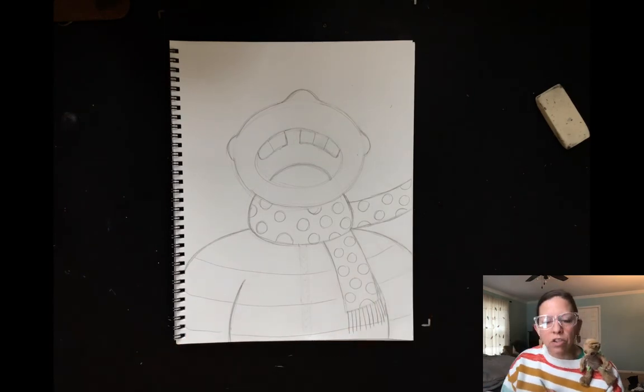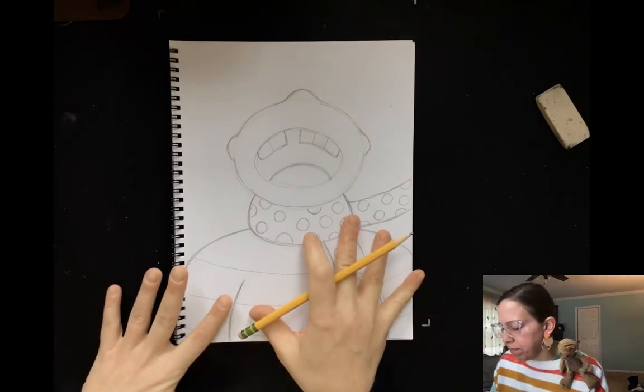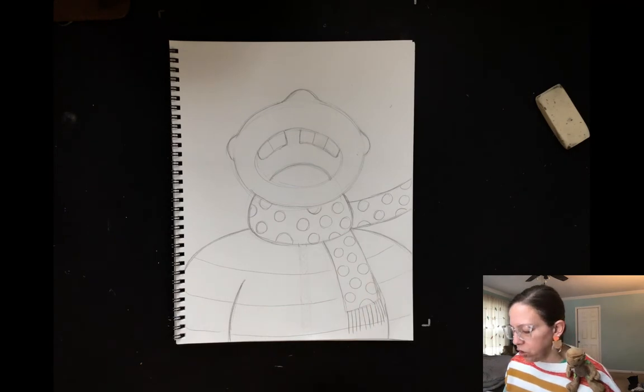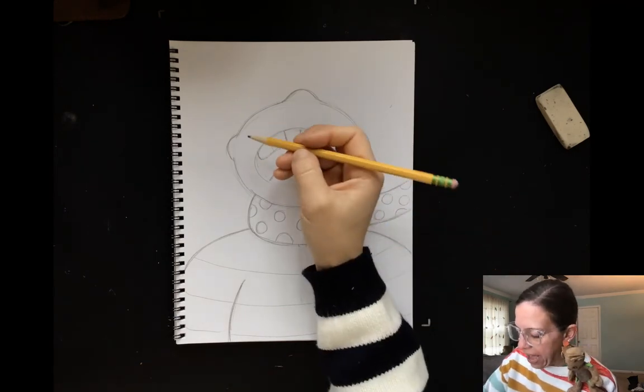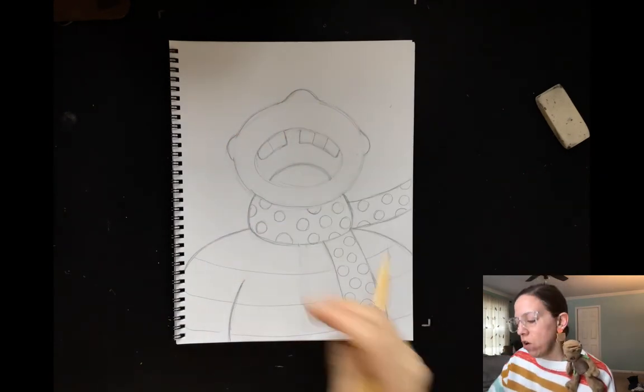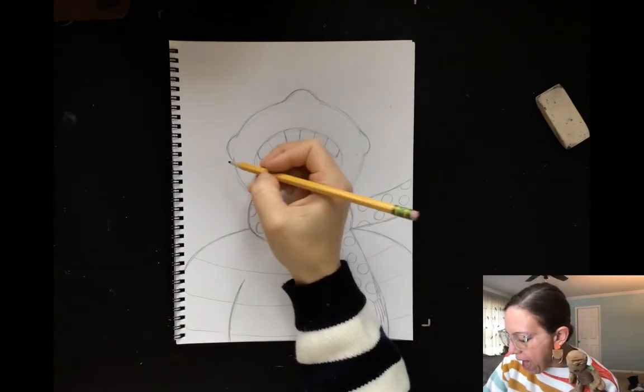So I have decorated my character, my person. The only thing that's left is hair. Now you have two options for hair. Let me explain both and then you can choose.